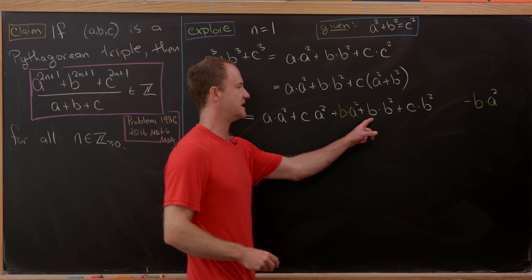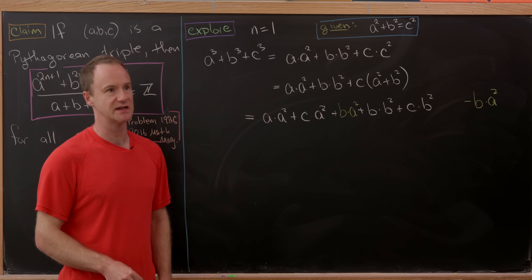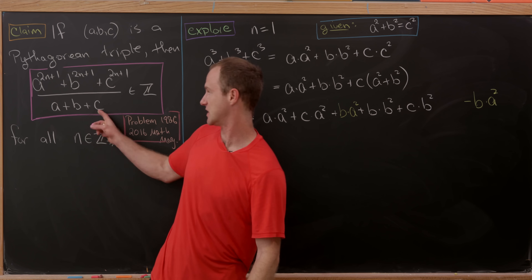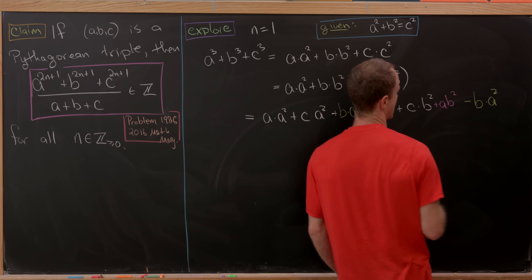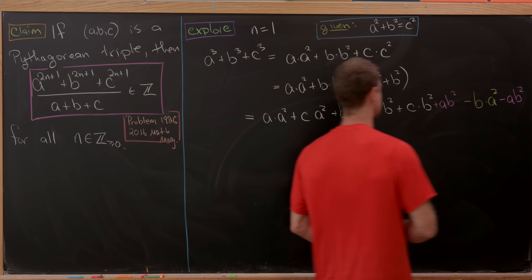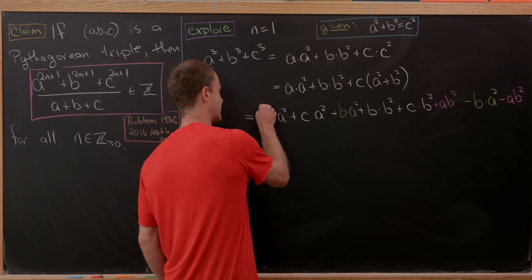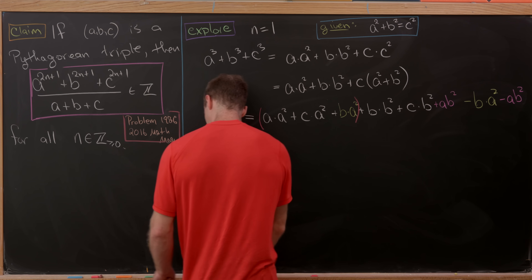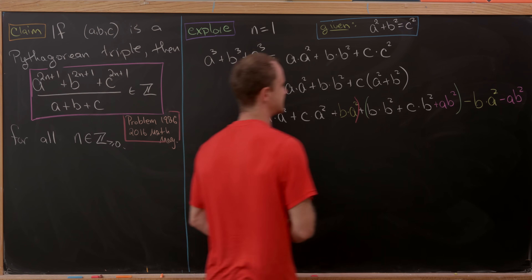Looking at the remaining terms, we can factor out b squared to get b plus c. But to get an (a + b + c), we'll also need an a times b squared term, which means we need to subtract that as well: minus a times b squared. Now let's do a little bit of grouping — grouping these first three terms and these next three terms — and see what we've got.